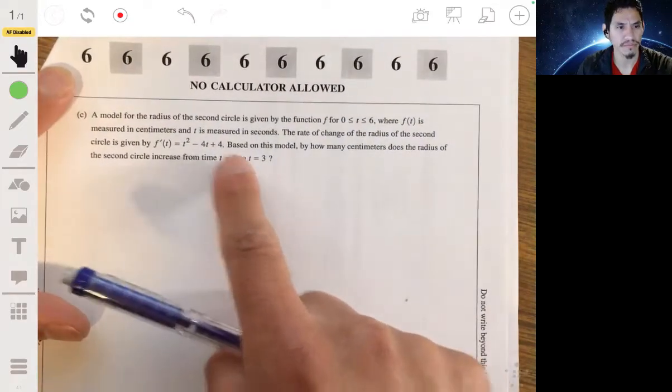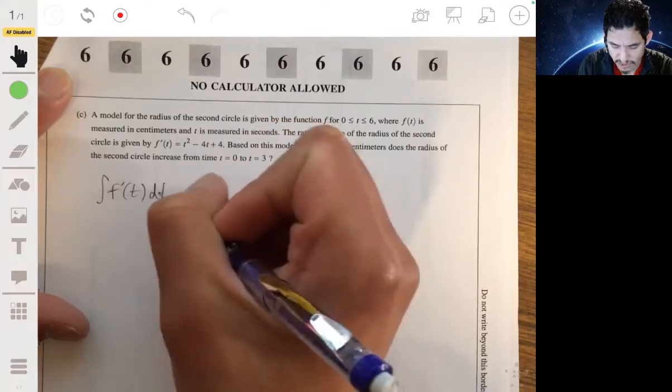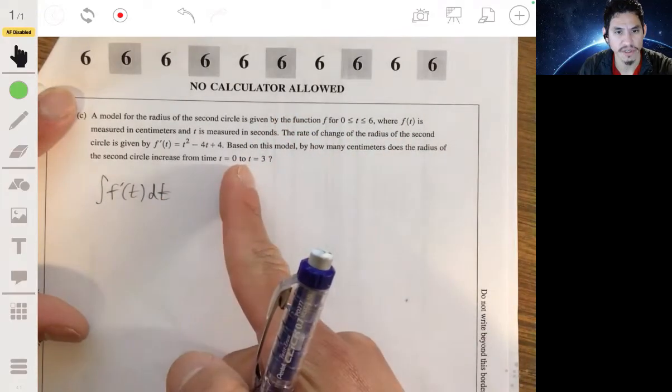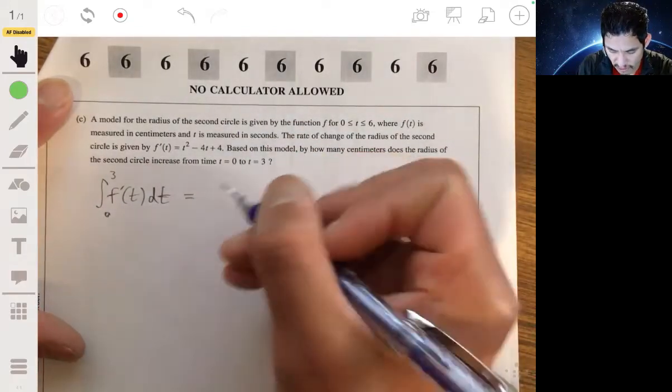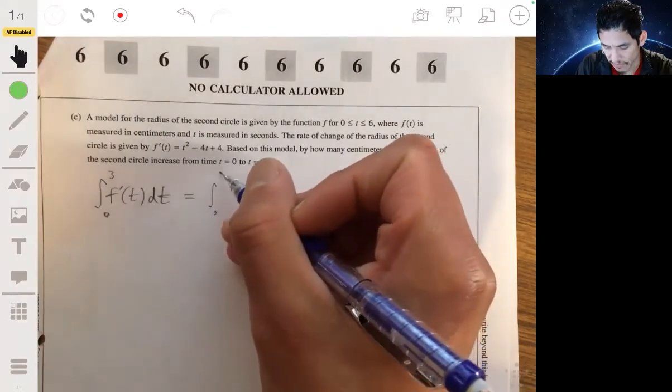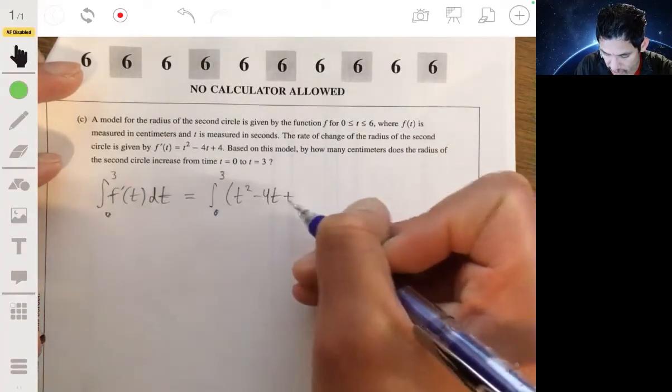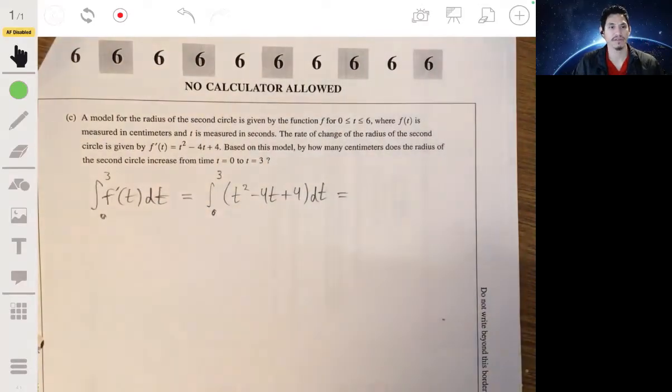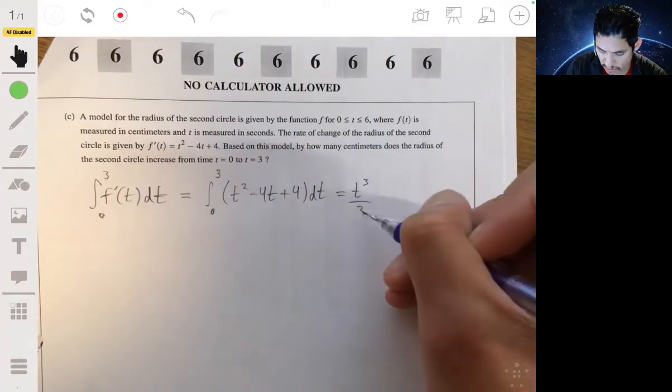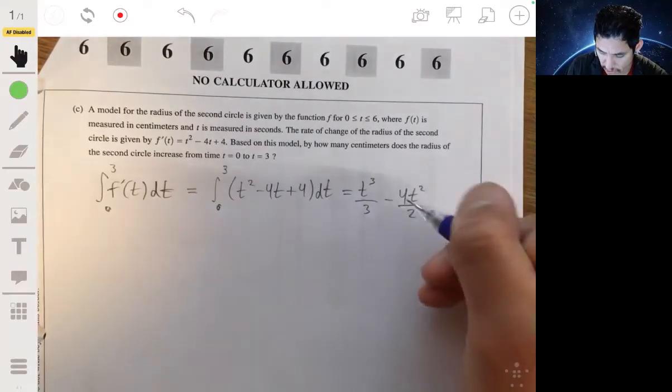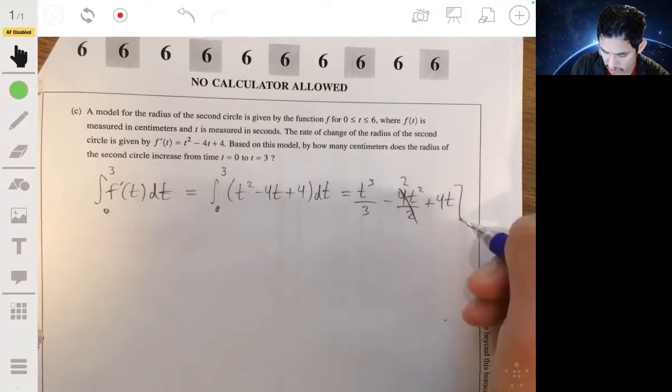Okay. So since this is the derivative, integrating this derivative will give you the function. So if we want to find how much it increased from 0 to 3, we just set up an integral from 0 to 3 of this function. So writing t² - 4t + 4 dt. And we just use our integration properties. So this becomes t³/3 - 4t²/2, or just 2t² plus 4t from 0 to 3.